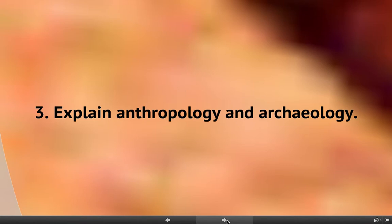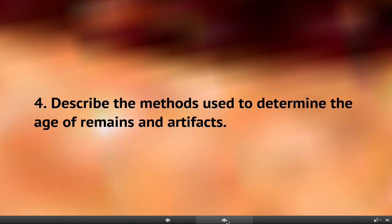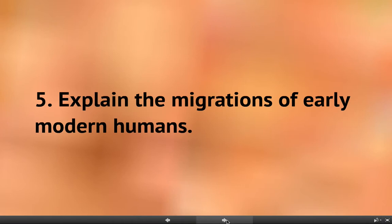Our third objective is to explain these two specific types of history called anthropology and archaeology — you'll be able to understand what those are. We will also be able to describe the methods used to determine the age of remains and artifacts. Historians, anthropologists, and archaeologists need to figure out how old things are, and there are a couple different methods they use to do that. Lastly, the fifth lesson objective is to be able to explain the migrations of early modern humans — where did humans begin, where did they migrate to, and how would that have worked?